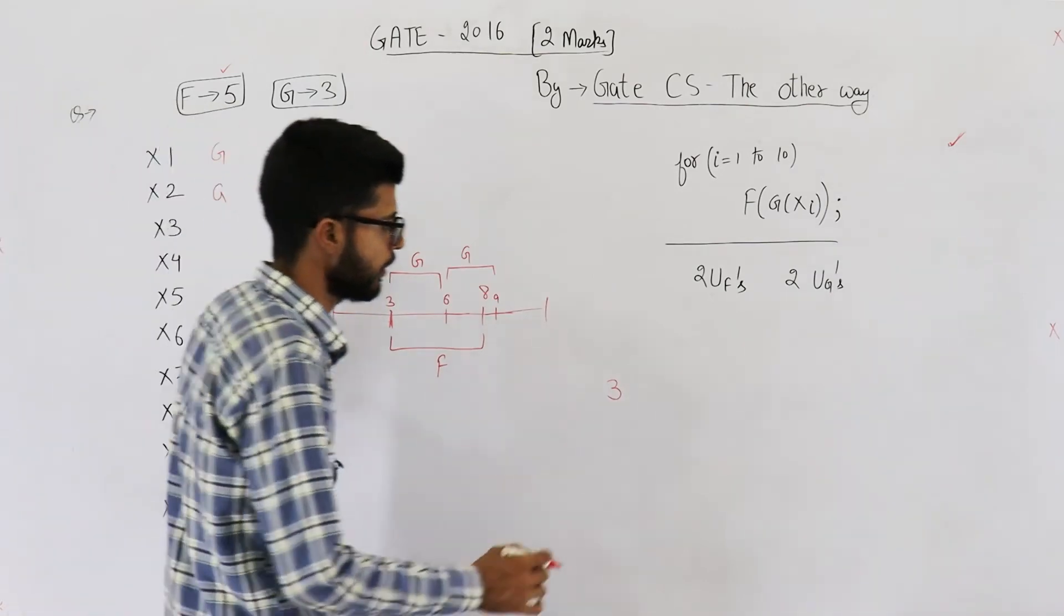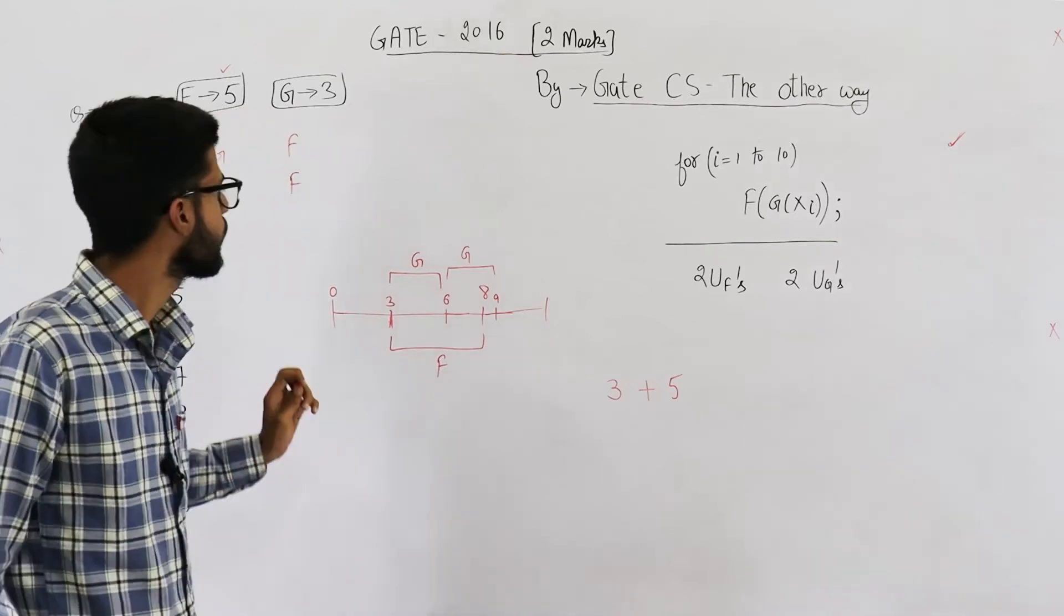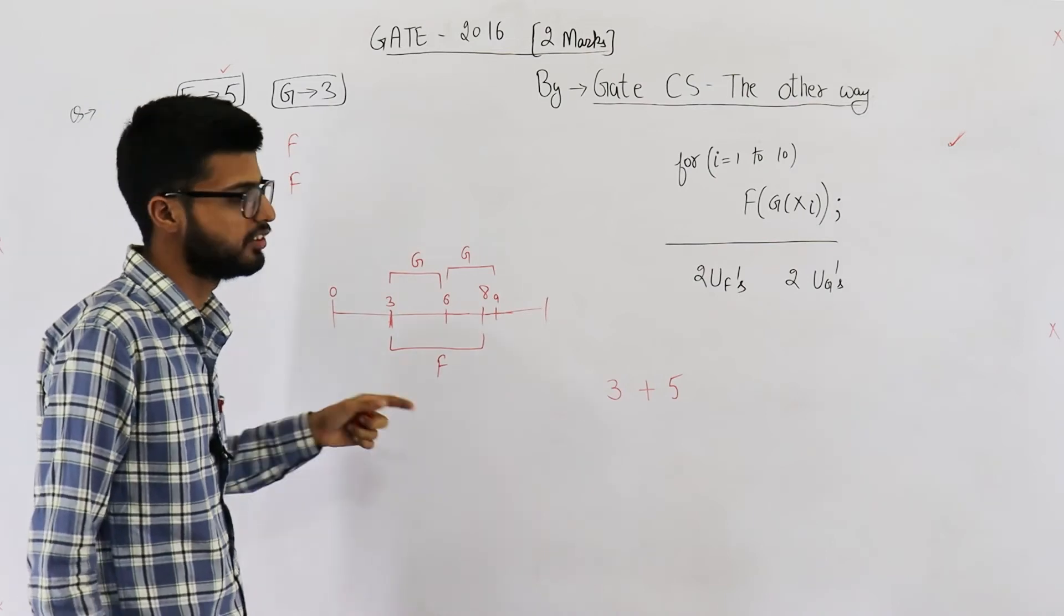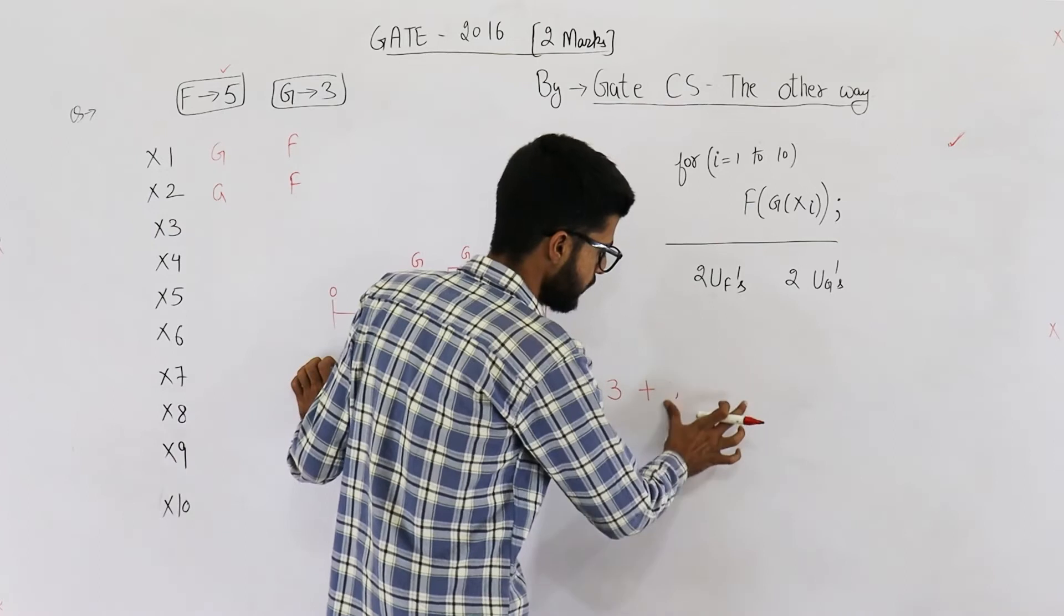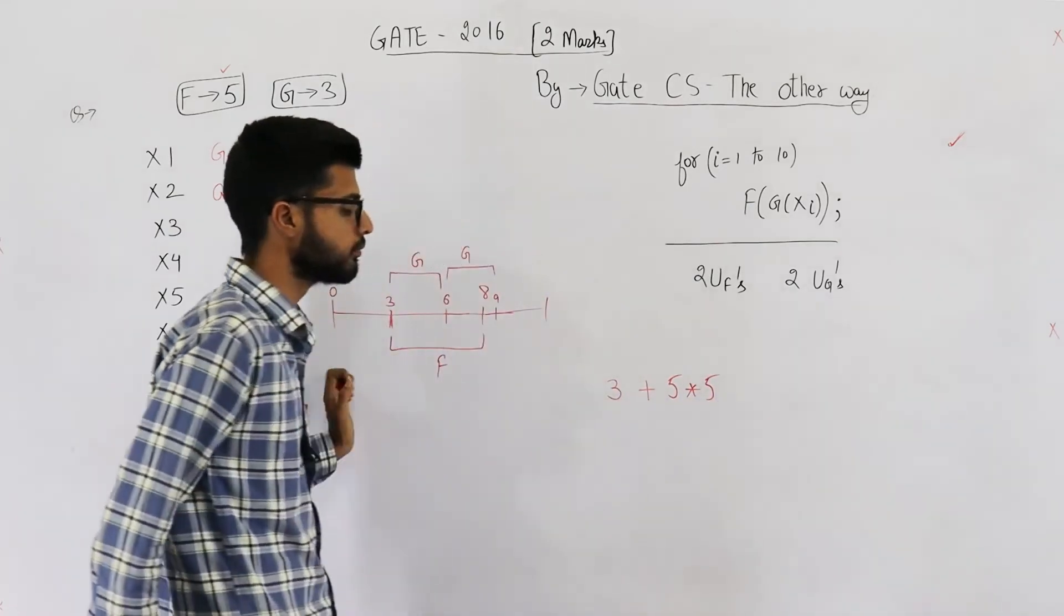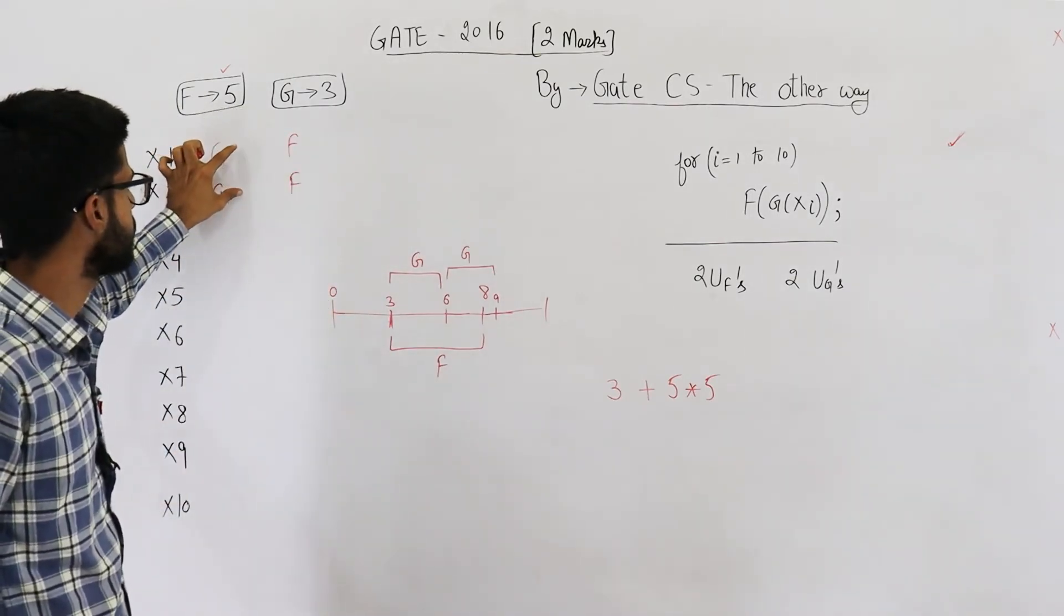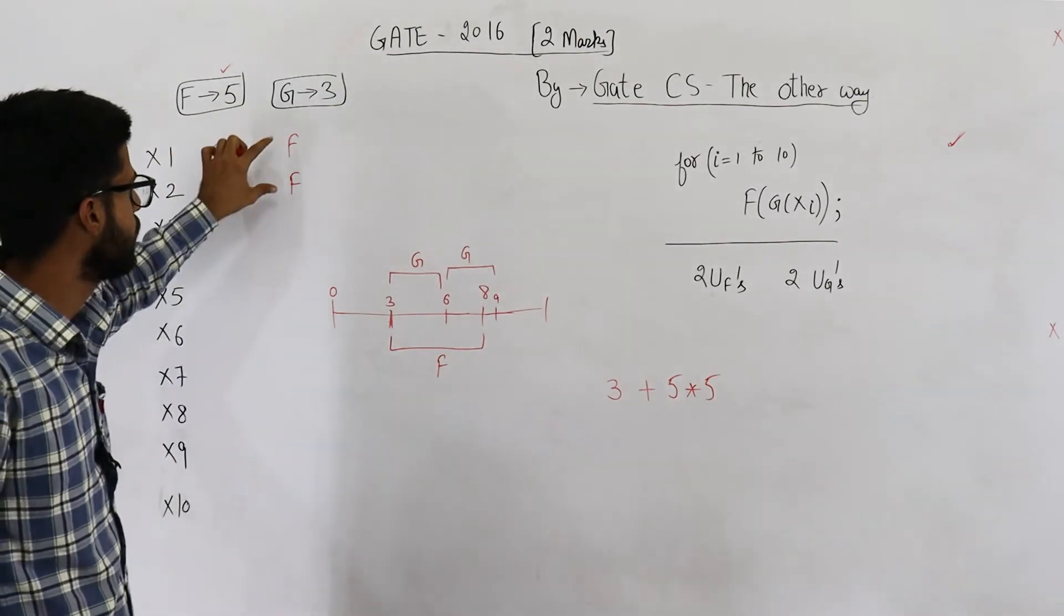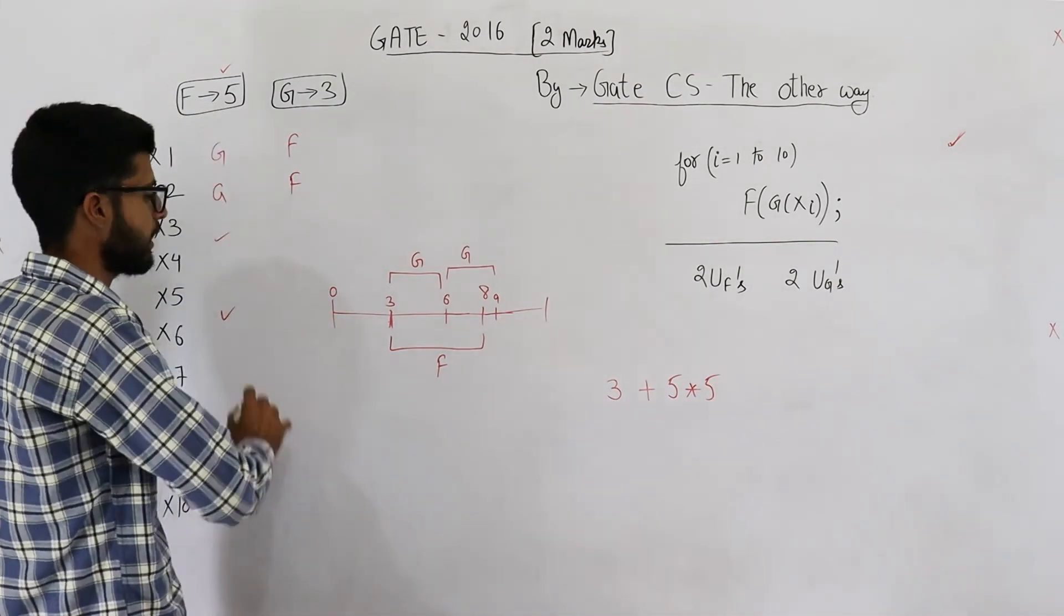That means, initial 3 seconds are required for computing g on any one pair. After that, you require 5 seconds for computing f of that gi, g of f of g of xi. And this thing has to be repeated 5 times. So, into 5. What I am saying is, after this initial g is computed for the initial pair, after that time, you just focus on computing f. Because anyways, these computations g will run in parallel.